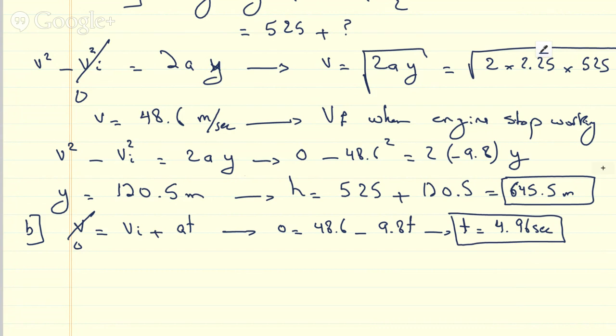Now, then it needs to go all the way from the top to the ground. So we need to find out what that is. We know the height, so we're going to use y equals y initial plus v initial T plus 1 half A T squared.